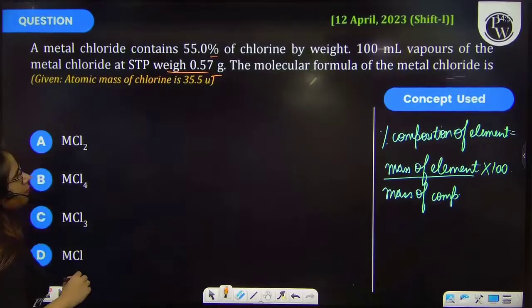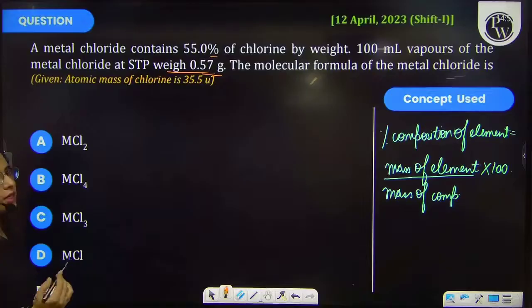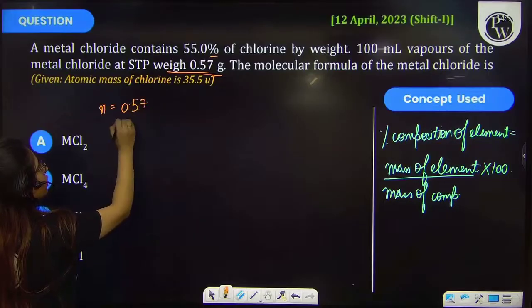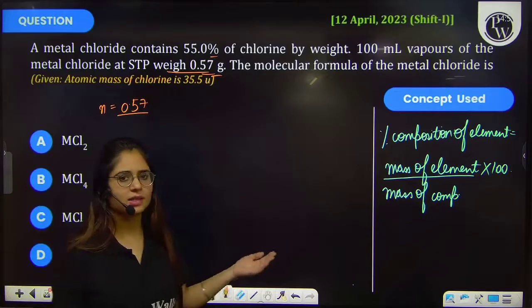Firstly, we have been provided with 0.57 gram of metal chloride, so this is a given weight component. We know that number of moles is equal to given weight upon molecular weight. Let us suppose the molecular weight of the compound, that is the metal chloride, is M.